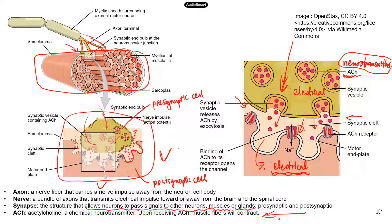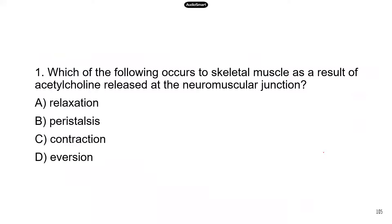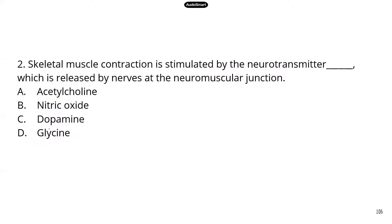So this is how your brain can consciously control muscle contraction and generate movement. This is a complicated process — you usually need to read the text a few times or watch videos to understand. If you still have questions, just let me know. Now let's look at some practice problems. Number one: which of the following occurs to skeletal muscle as a result of acetylcholine released at the neuromuscular junction? Acetylcholine is the chemical molecule that motor neurons release to tell skeletal muscles to contract, so the correct answer is C.